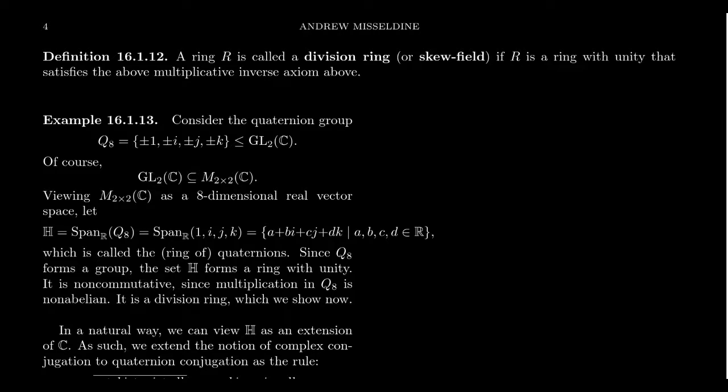Fields are examples of division rings, because in a division ring we have well-established addition, subtraction, multiplication, and division. The difference, of course, is that in a skew field or division ring we don't assume that multiplication is commutative, which also makes division interesting — you get a left division versus a right division. But we won't worry about that so much right here.